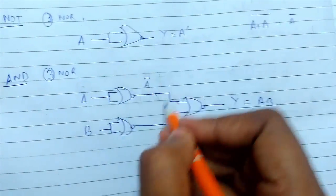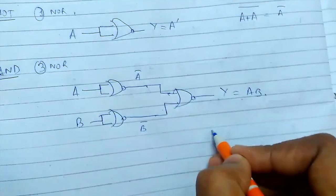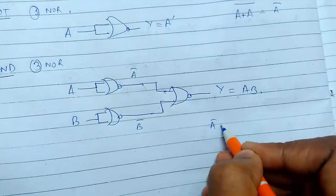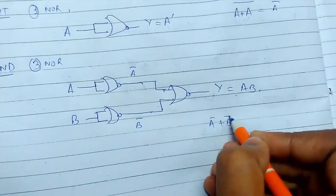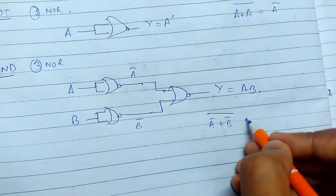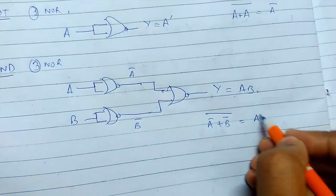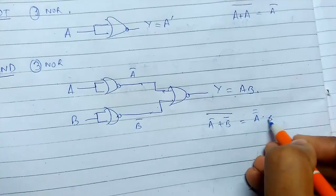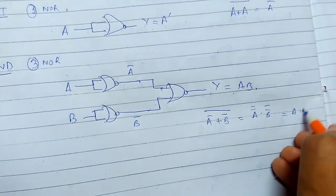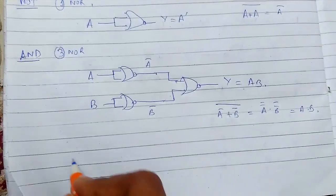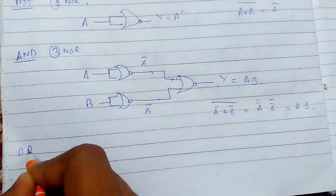This is A bar, just from here this is B bar. And A bar plus B bar whole bar. Using De Morgan's law this will be A dot B. And this will be the result. Now next we have the OR gate.